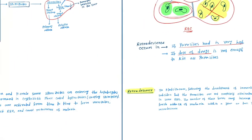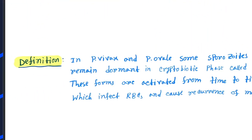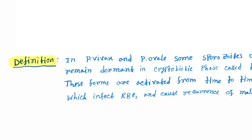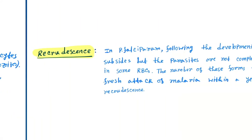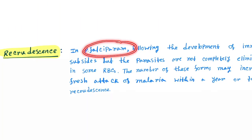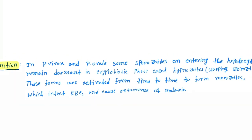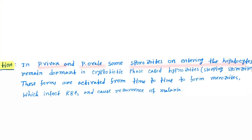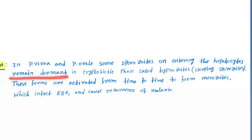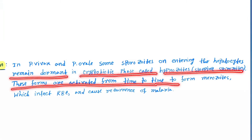These are the concepts of relapse and recrudescence. Now for the definition, you have to remember that relapse occurs in Plasmodium vivax and Plasmodium ovale, but recrudescence occurs in Plasmodium falciparum. In P. vivax and ovale, some sporozoids entering the hepatocytes remain dormant in the exoerythrocytic phase called hypnozoids.